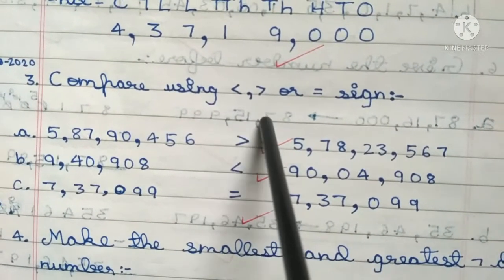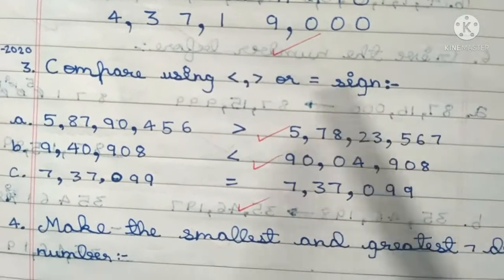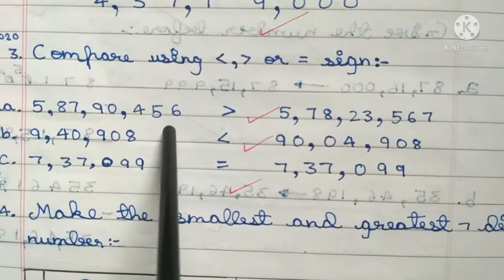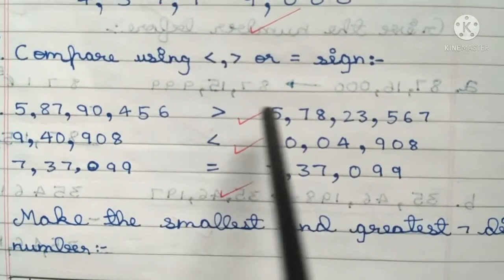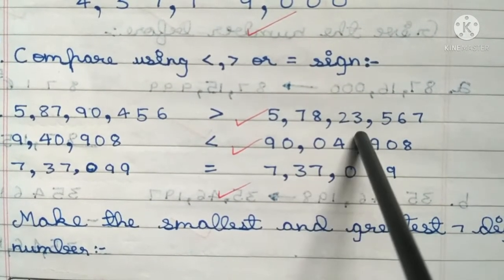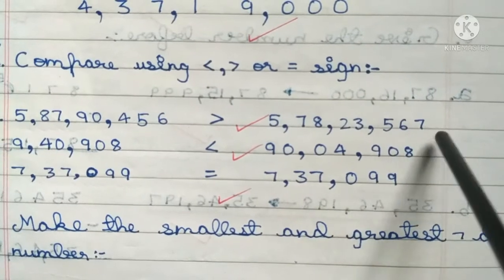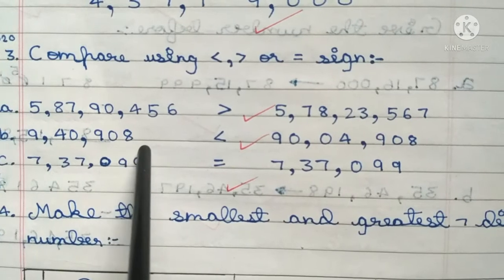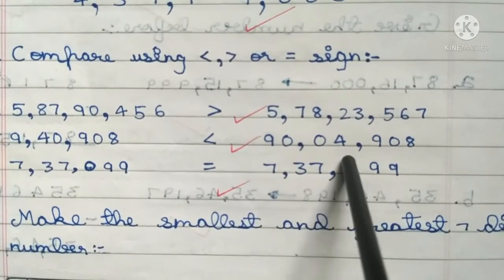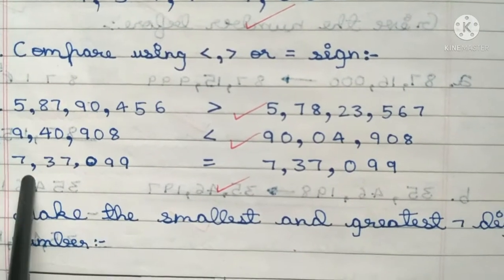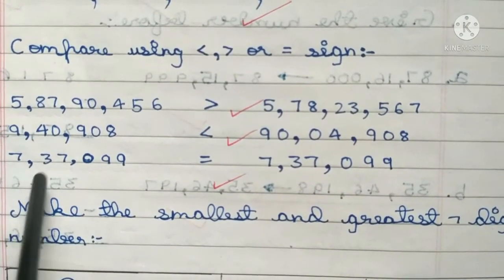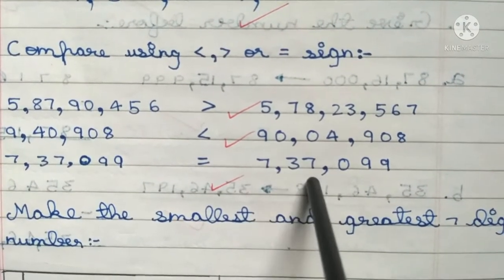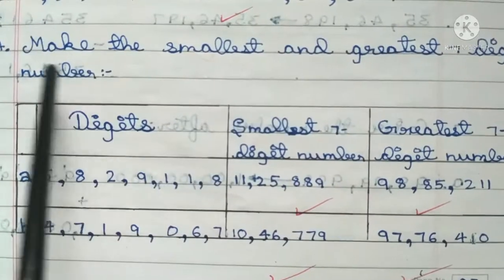Compare using less than, greater than, or equal sign. 5 crore 87,90,456 is greater than 5 crore 78,023,567. 9 lakh 40,908 is less than 90,4,908. 7 lakh 37,099 is equal to 7 lakh 37,099.